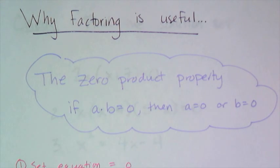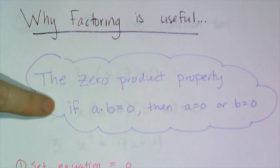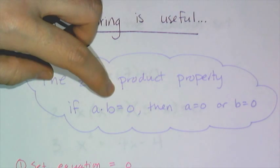The property is called the zero product property, and it's one of those properties that when you hear it you're like, oh okay, so what's the big deal, I knew that was true. But it's actually super important. It says that if I have two numbers a and b and they're multiplied together and they equal zero, that means either a is zero or b is zero.